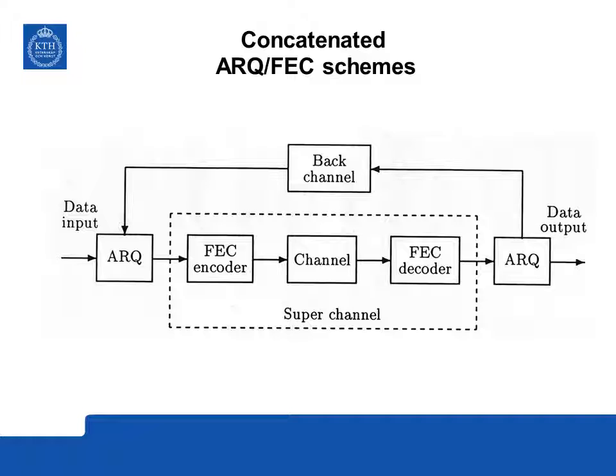To improve performance under bad channel conditions, concatenated or combined schemes can be used, combining repetition and forward error correction. Data is processed by a regular ARQ scheme with error-detection check symbols, and then additional check symbols for error correction are added. The combined package is transmitted; at the receiver, the correction decoder first corrects as many errors as possible, then the ARQ scheme detects any remaining errors. If errors remain, the packet is retransmitted; otherwise, data is output to the user.